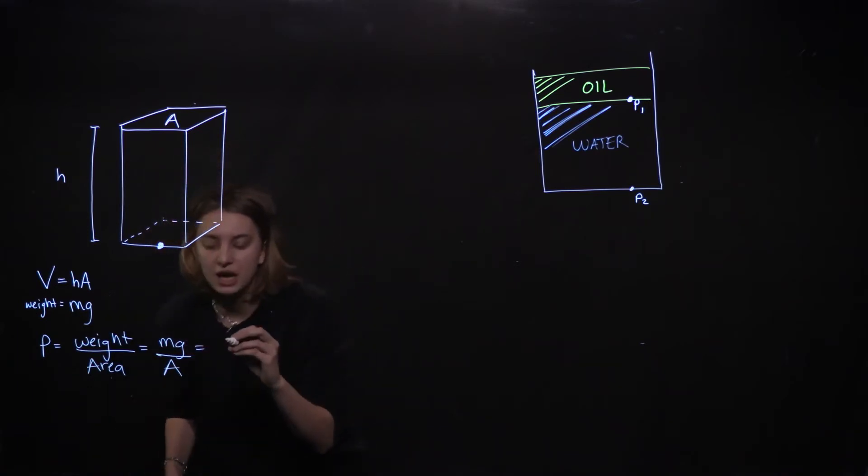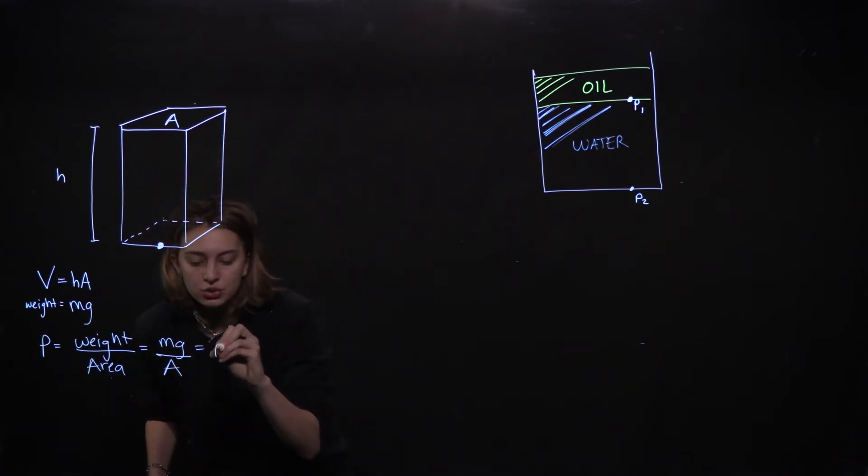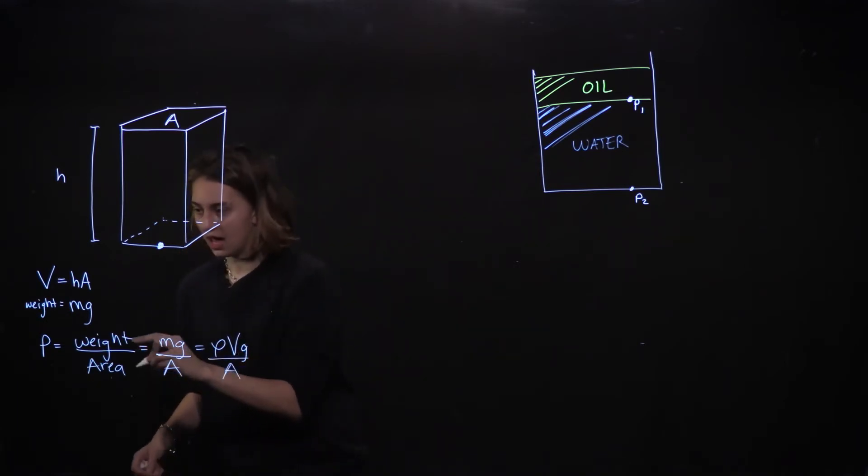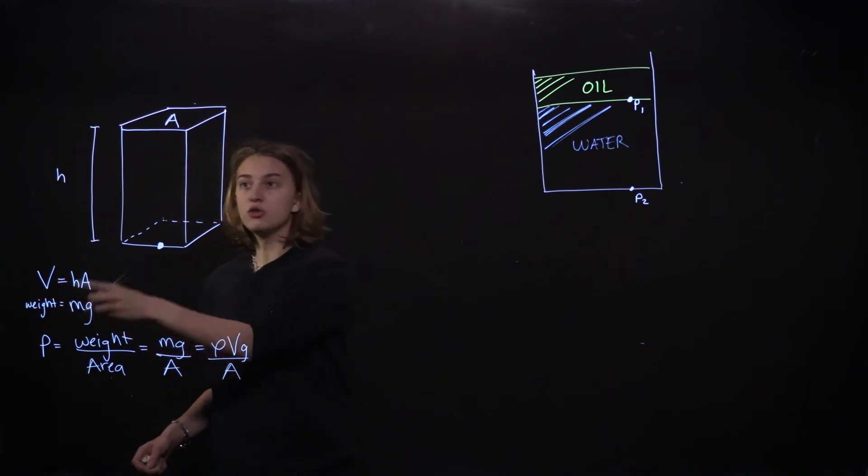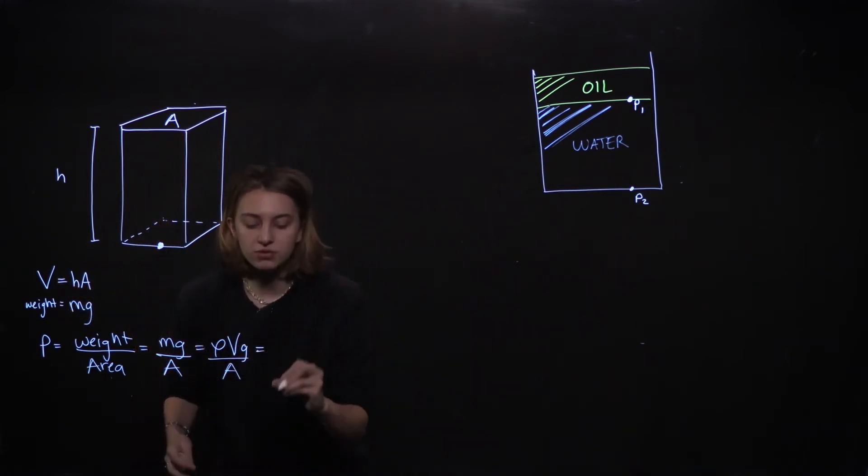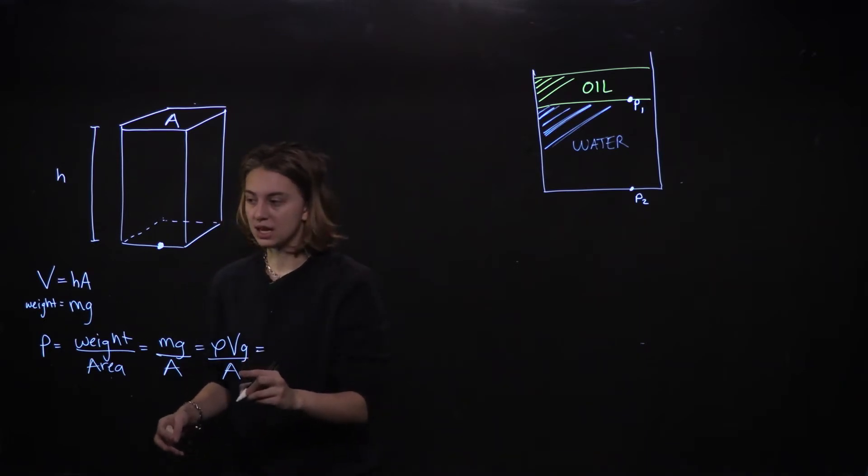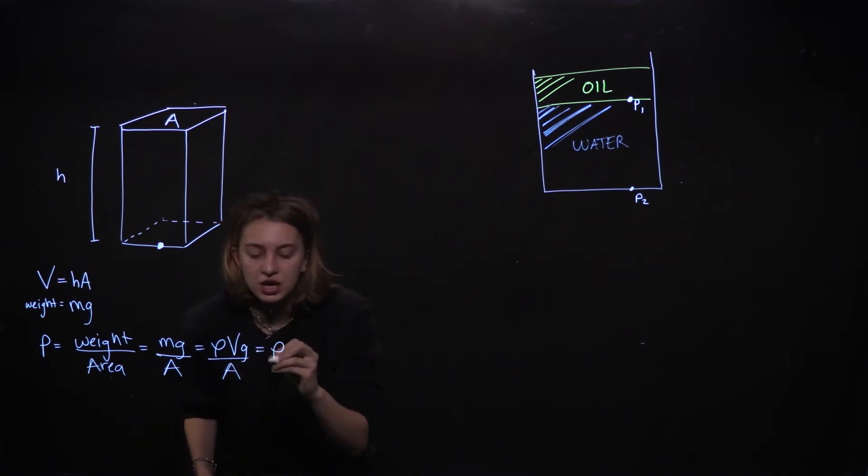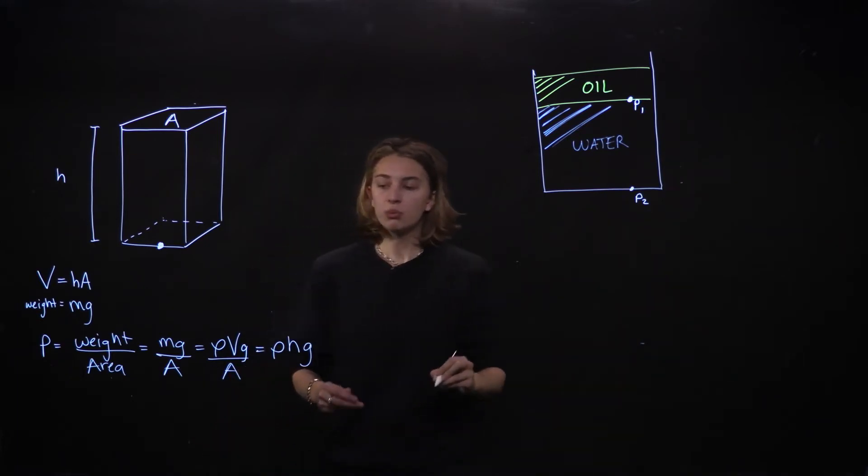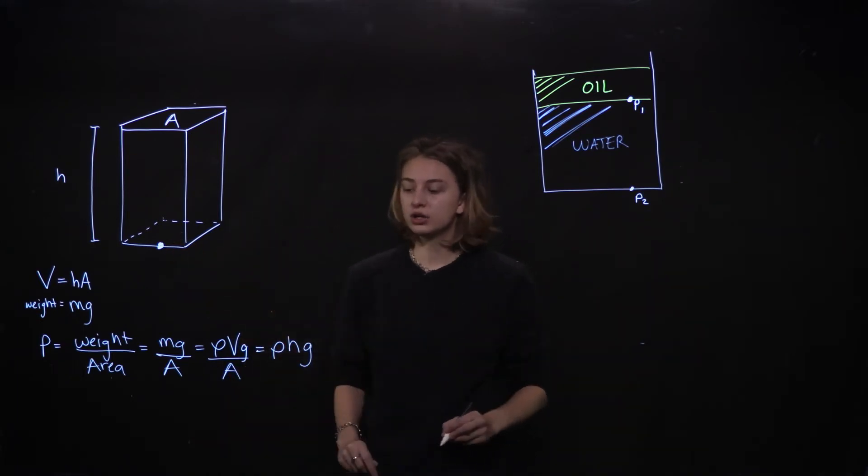We can do some simplification knowing that mass is equal to rho density volume G over A. And then based off of the fact that the volume of this column is its height times its area, we can make one more simplification by replacing volume with H A which cancels out and we will get rho H G for our pressure under that column.